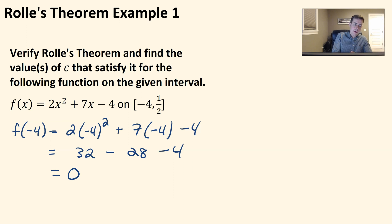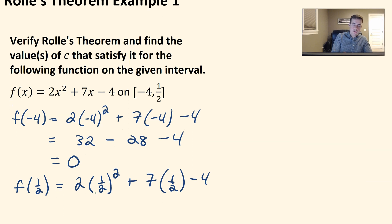And then if we did F of 1 half, that would be 2 times 1 half squared plus 7 times 1 half minus 4. Well, 1 half squared is 1 fourth, so this would be 2 times 1 fourth, which is just a half. Plus 7 halves minus 4. 1 half plus 7 halves is 8 halves. 8 halves is 4, and 4 minus 4 is just 0.